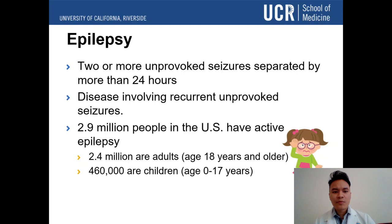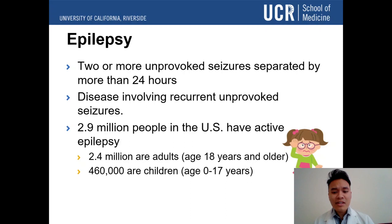So, what's epilepsy? Epilepsy is basically two or more unprovoked seizures separated by more than 24 hours — essentially recurrent, unprovoked seizures that keep occurring without any real triggers throughout a person's life. 2.9 million people in the U.S. have active epilepsy: 2.4 million are adults and 460,000 are children.